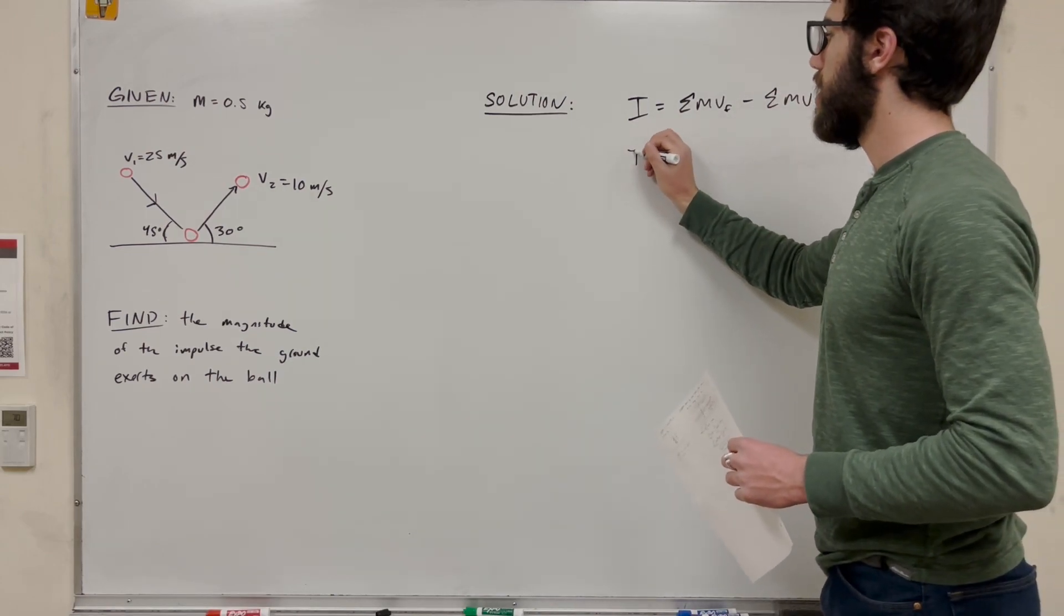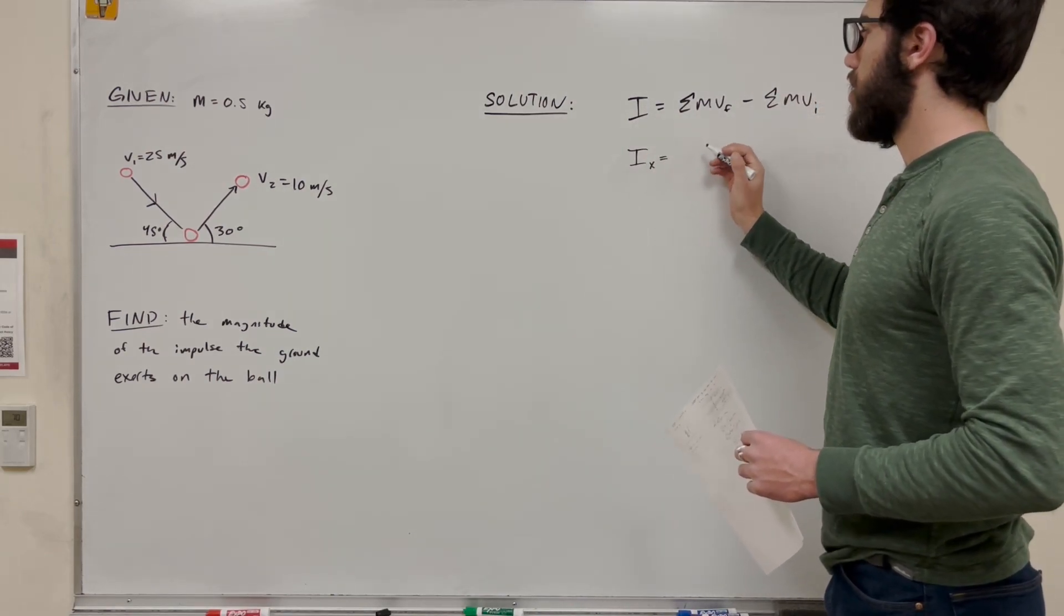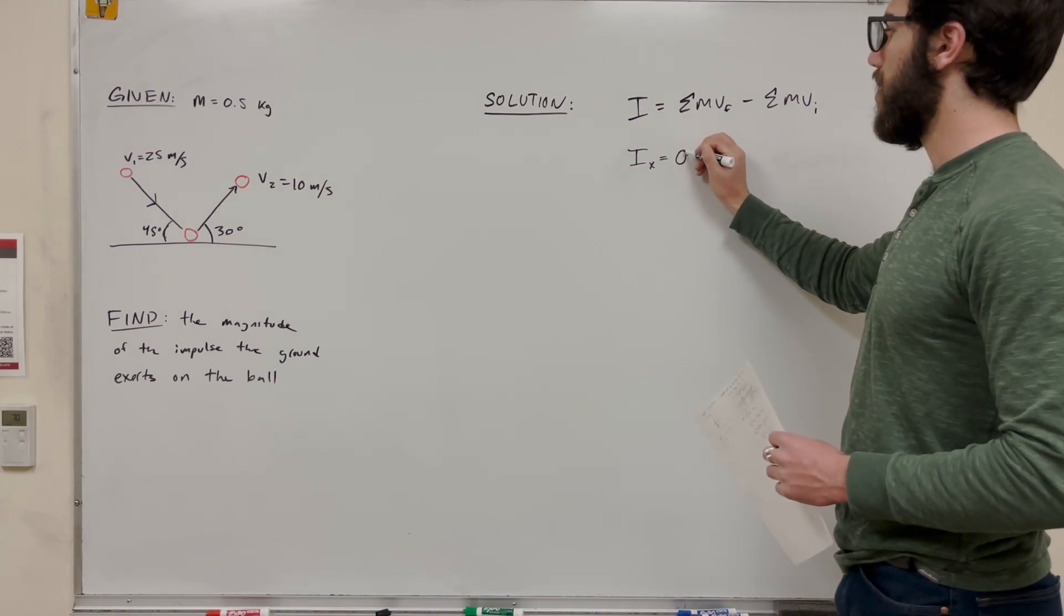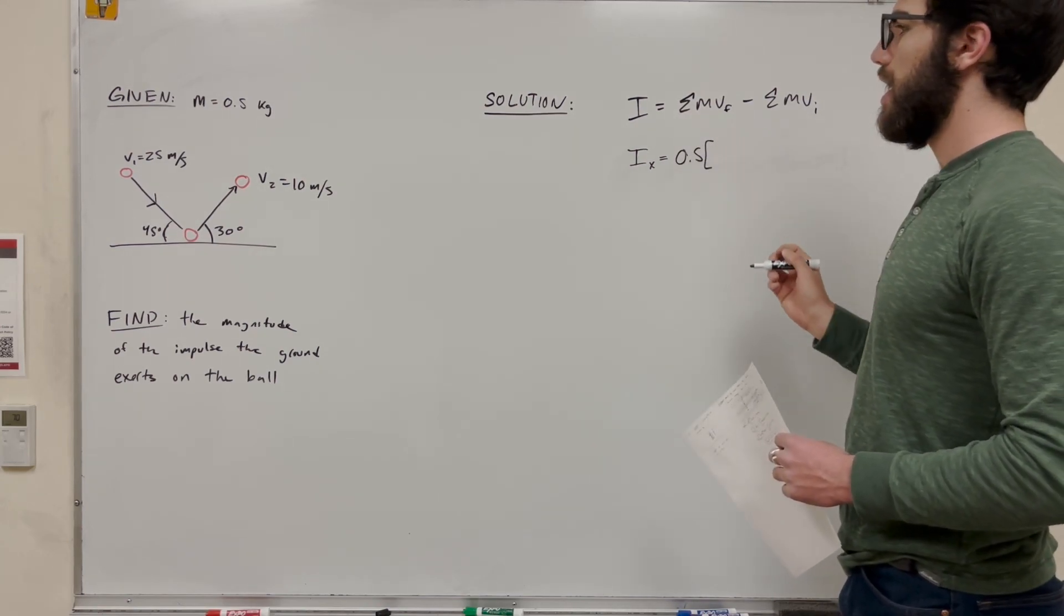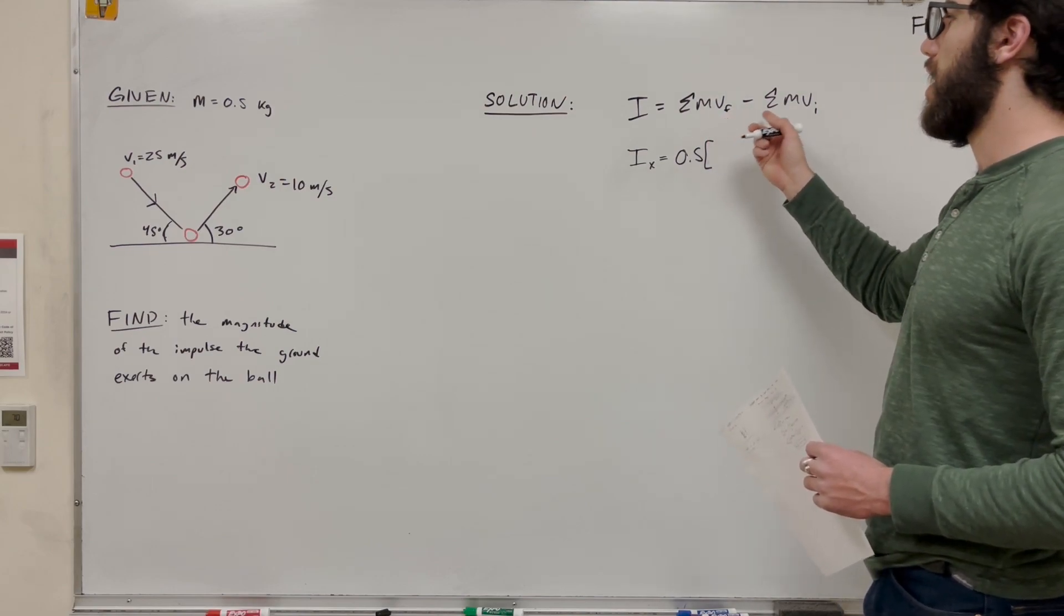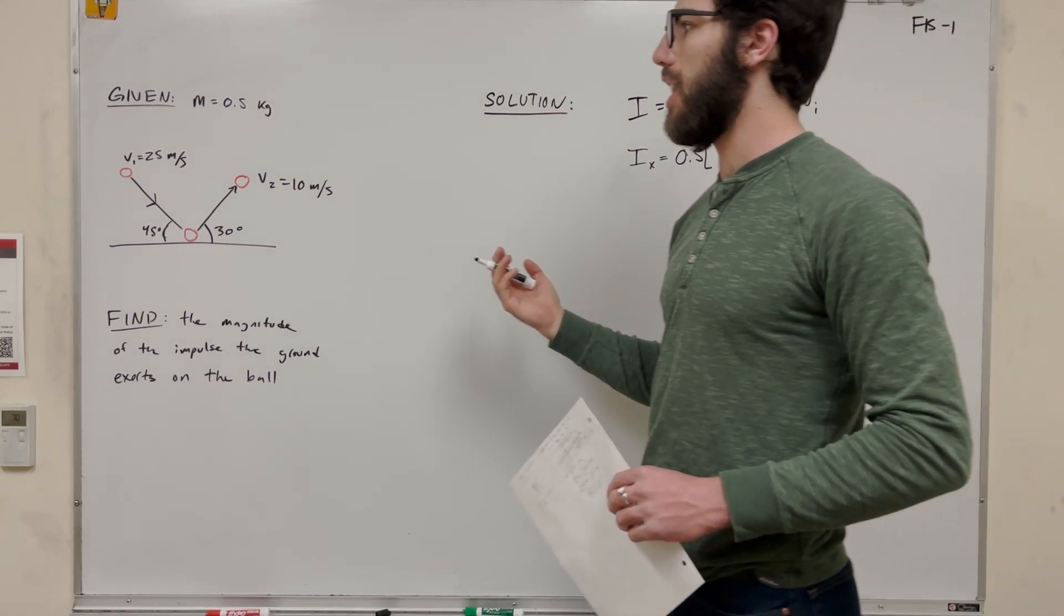So let's go ahead and start in the x direction. If we're adding this up, the mass can be factored out. We know it's going to be 0.5 kilograms and that's going to be multiplied by velocity final, velocity initial, but it needs to be the components in the x direction.